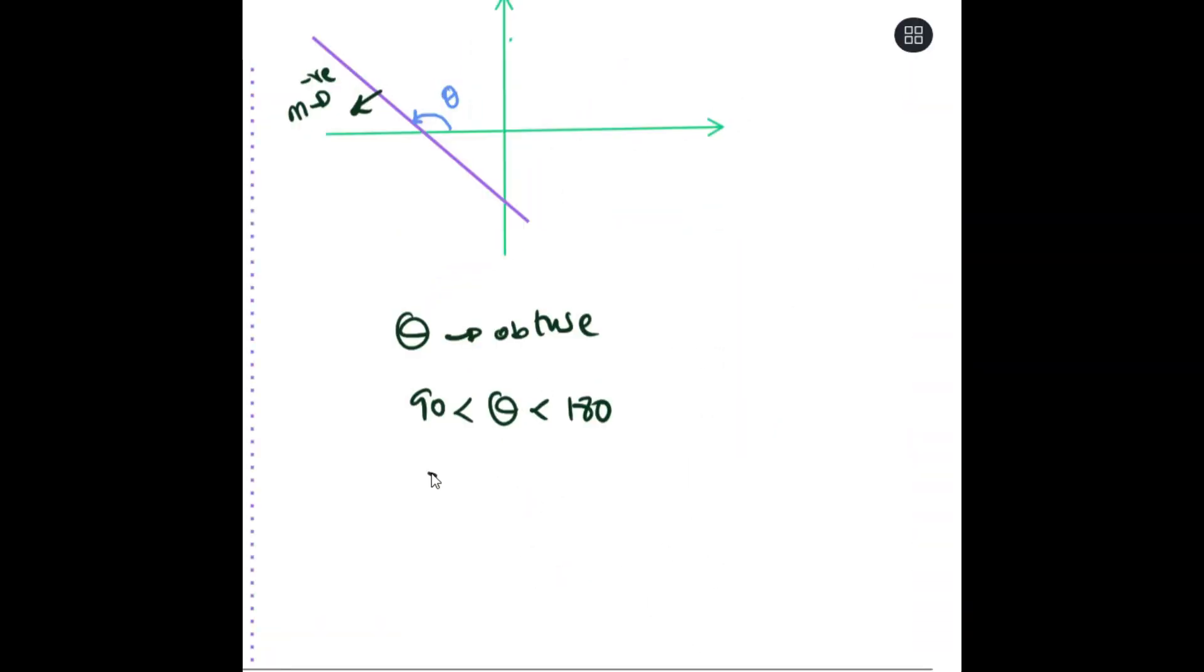When the gradient is negative and you want to calculate your angle, you would first of all get the reference angle. This gives you a reference angle. Then to get the actual angle that you use, theta would be 180 minus the reference angle, and your answer for your theta would be between 90 and 180 like we talked about.